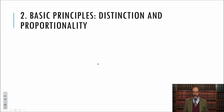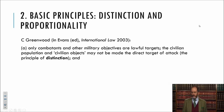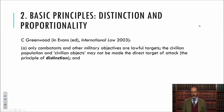Two of the most fundamental principles of the law of armed conflict — which also have a role in international criminal law — are the principle of distinction and the principle of proportionality. As defined by Christopher Greenwood: first, only combatants and other military objectives are lawful targets. The civilian population and civilian objects may not be made the direct target of attack.